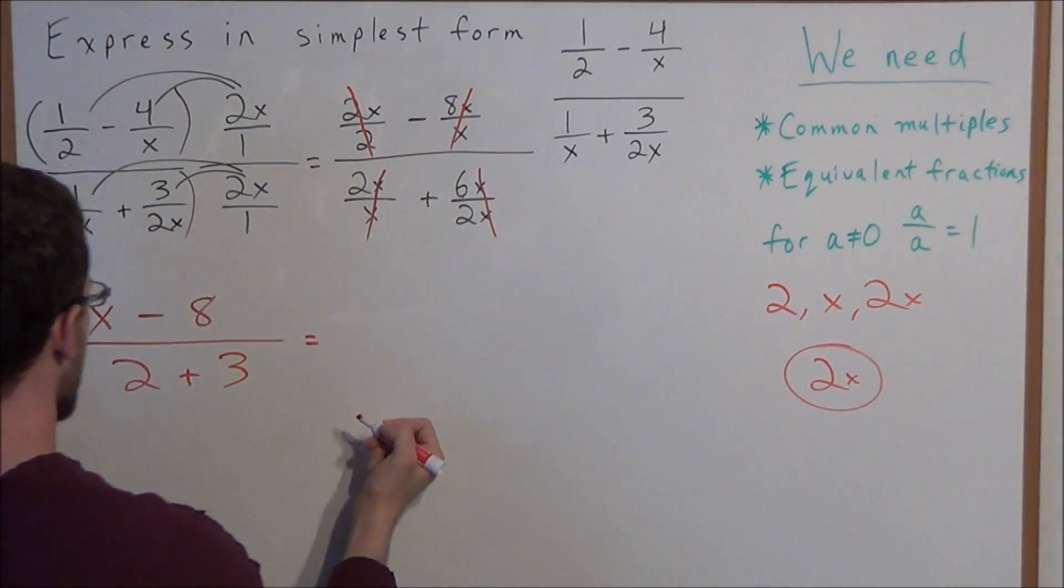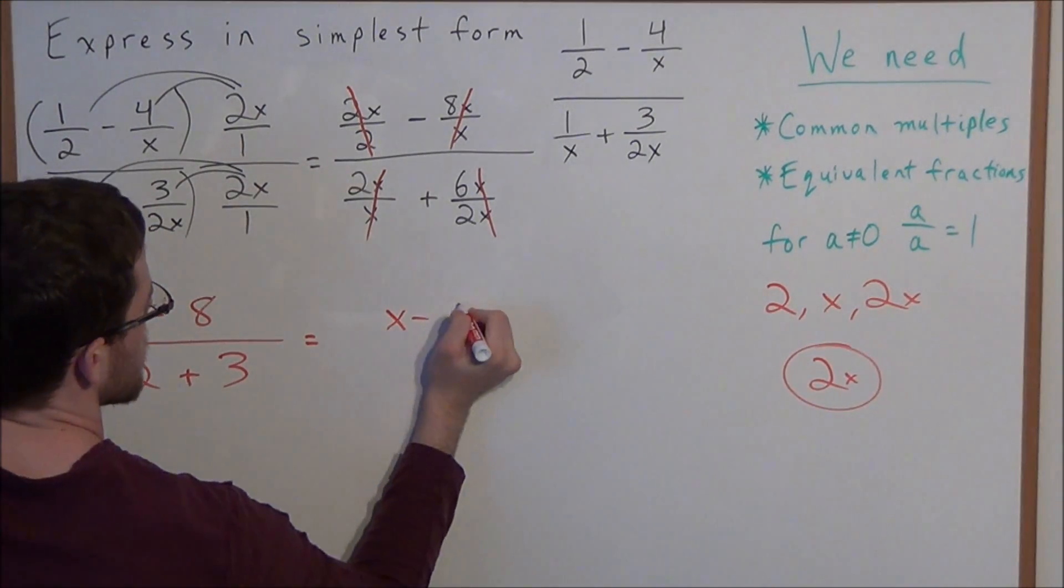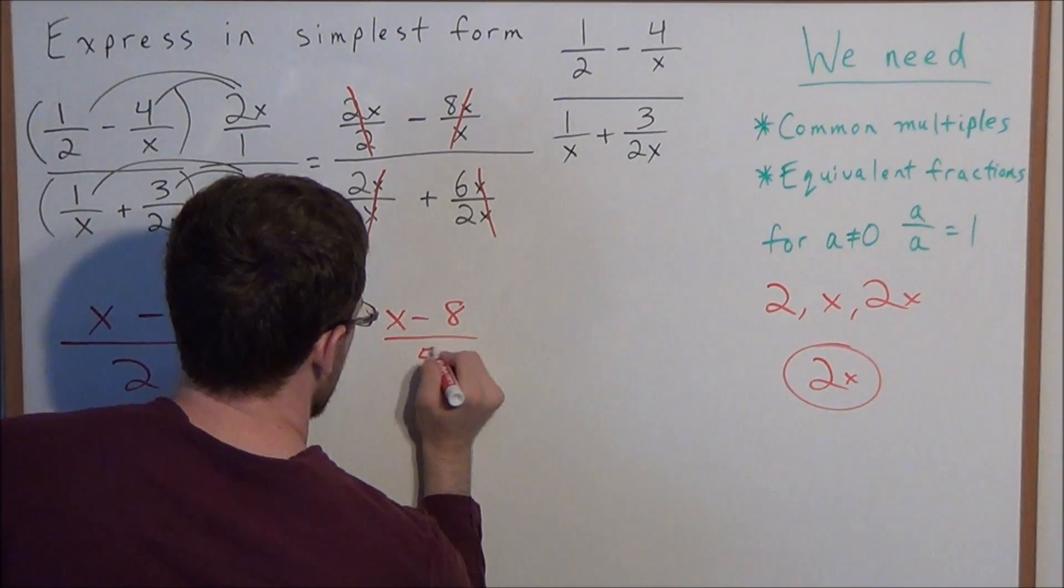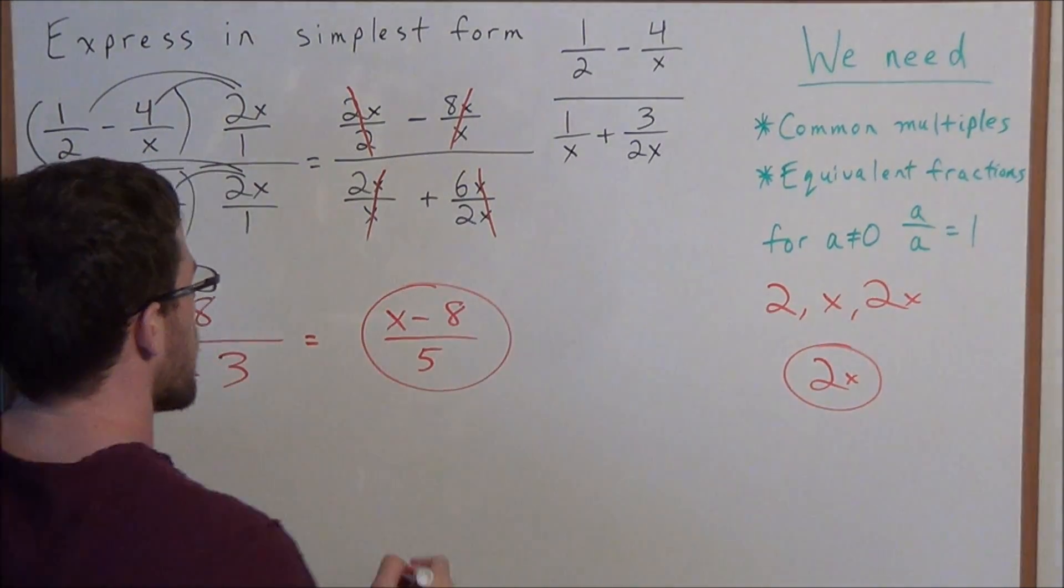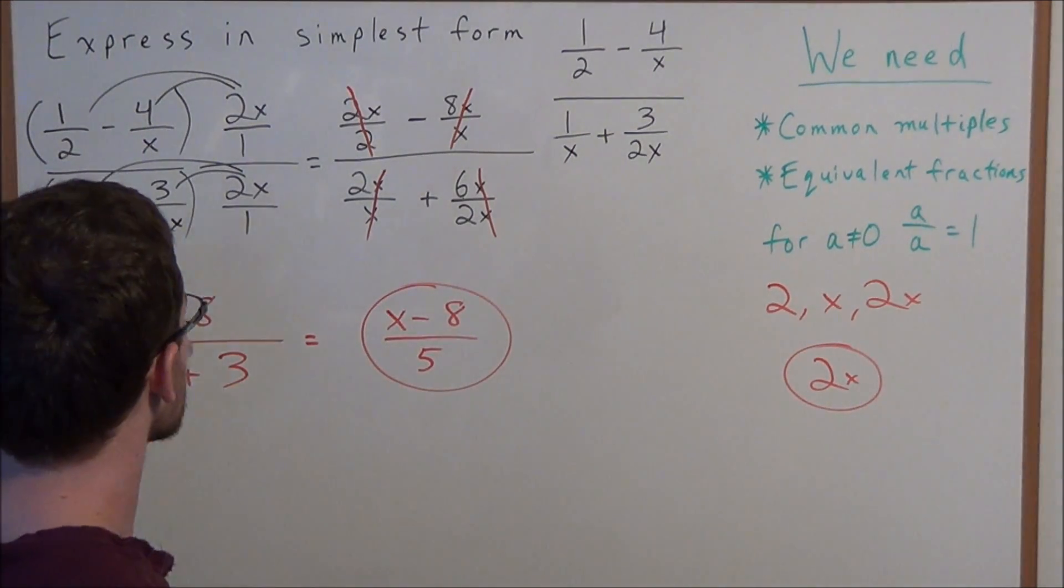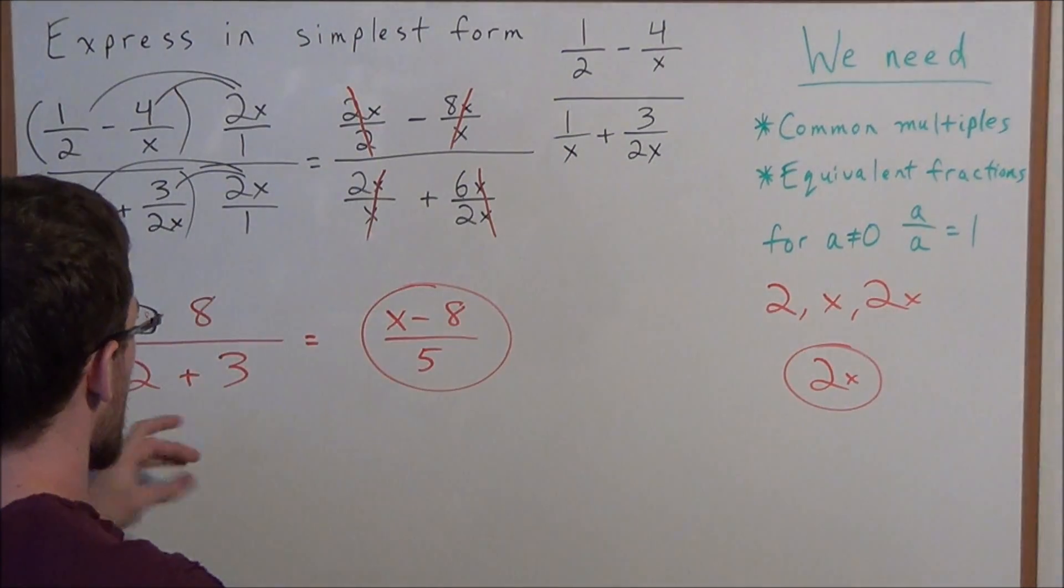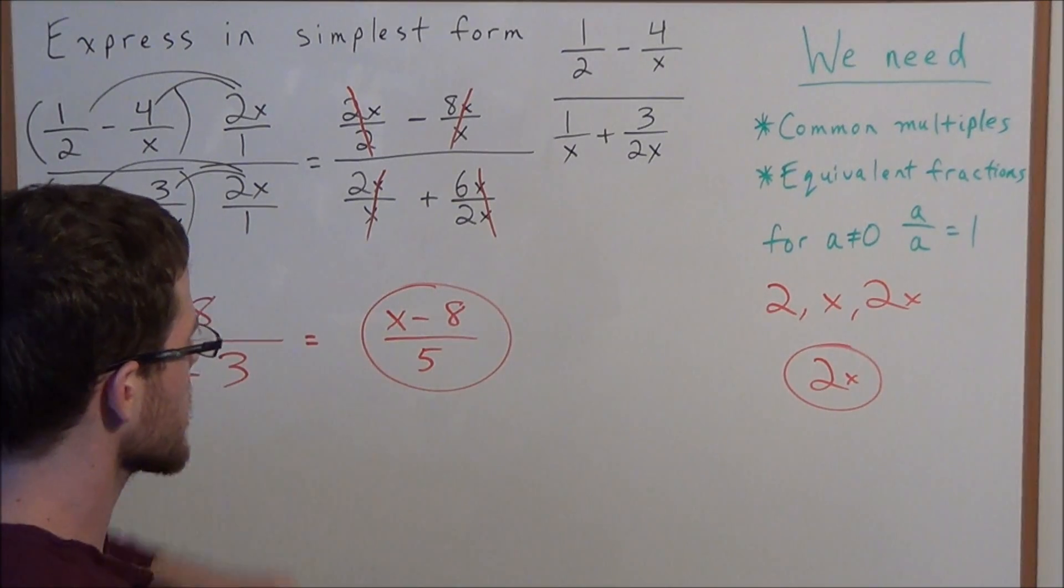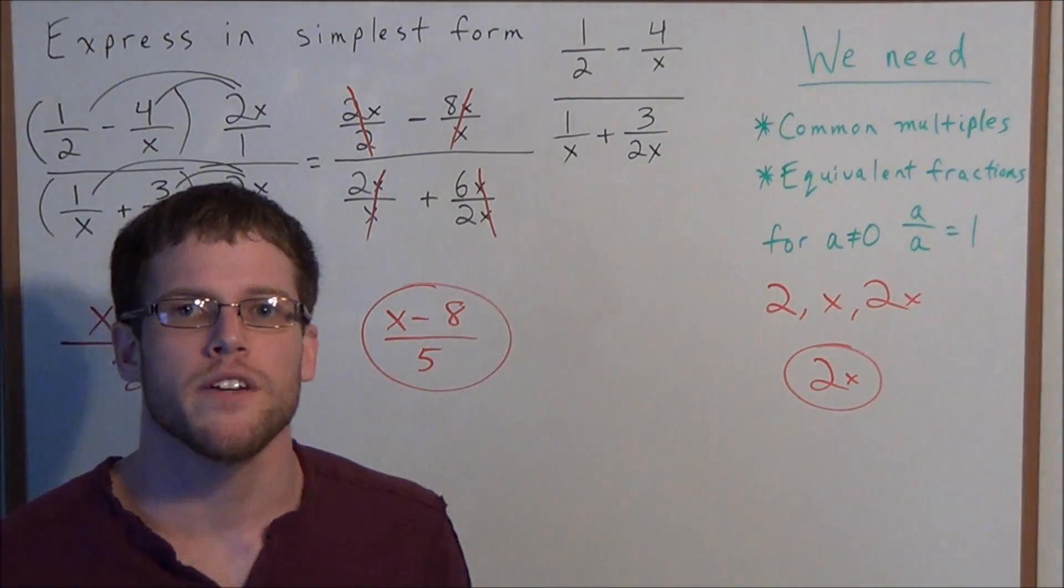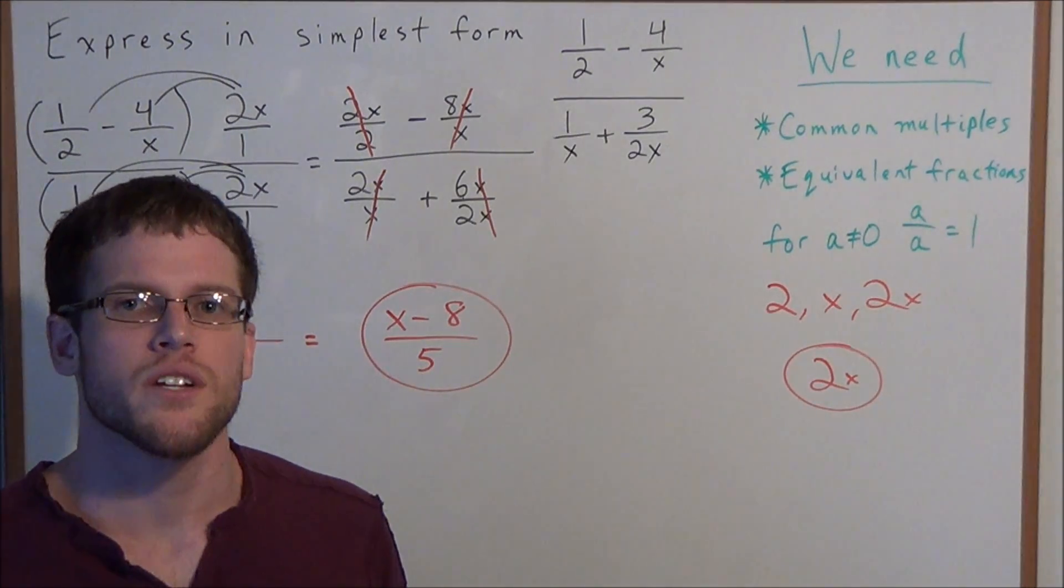So the answer to this problem, we have x minus 8 divided by 2 plus 3, which is 5. There are other ways to solve this problem, but I think using common multiples is the easiest way to get everything to just collapse into something nice like x minus 8 over 5. Okay, this is going to conclude this problem, as well as this video. Thank you all for watching, and I hope that it was helpful.